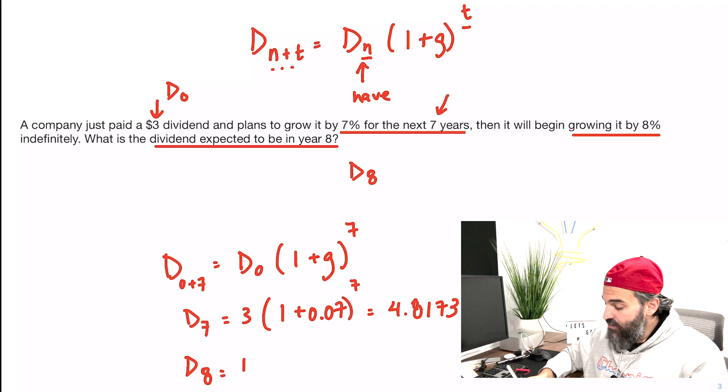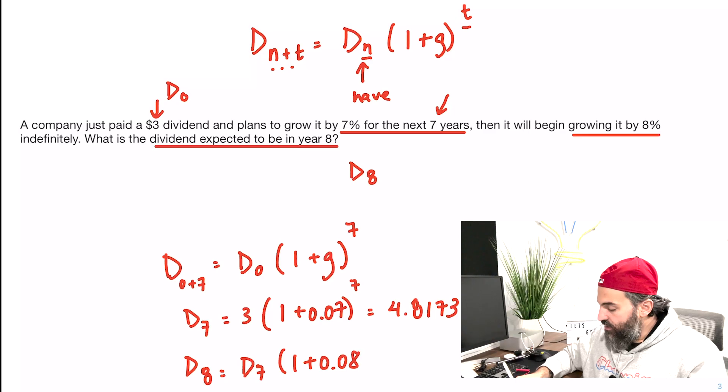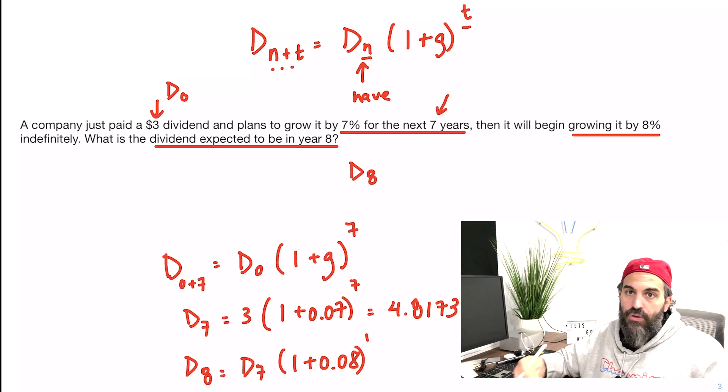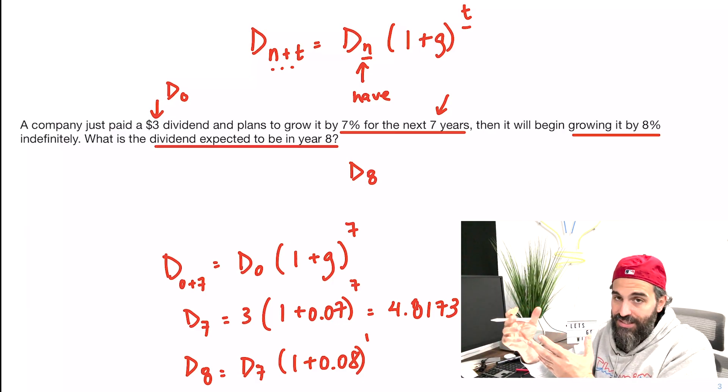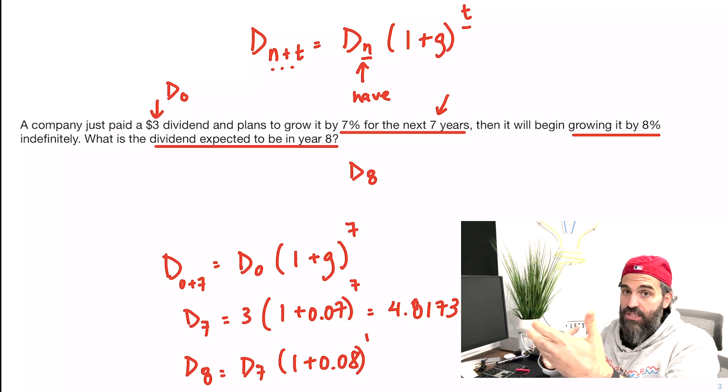and I have D7 this time, I'm going to grow by 1.08 to the 1. Again, if you forget or if you don't know how to use those formulas, the logic is that it's only going to grow by 8% once between D7 and D8.